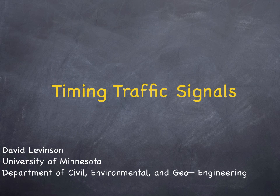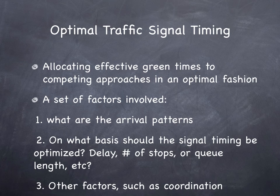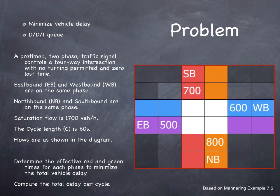This video lecture is going to look at how to time traffic signals. Optimal traffic signal timing requires allocating effective green times to competing approaches in an optimal fashion. You need to know what the arrival patterns are and what basis the signal timing should be optimized on — whether we are trying to minimize delay, minimize number of stops, minimize queue length, and what other factors such as coordination are at play. This example is going to simplify things and look at minimizing vehicle delay.